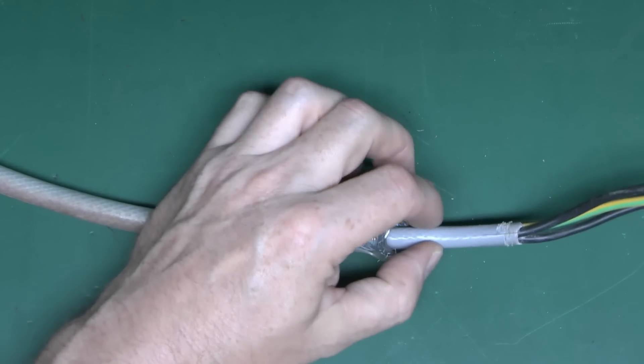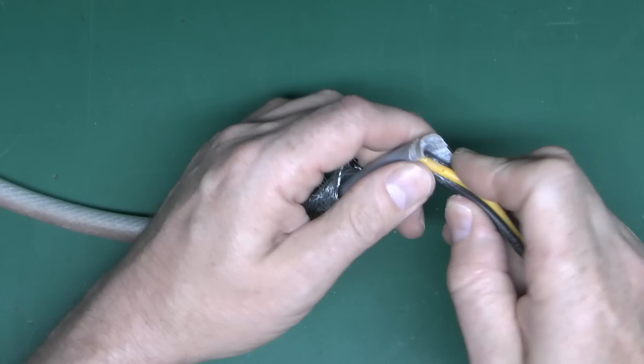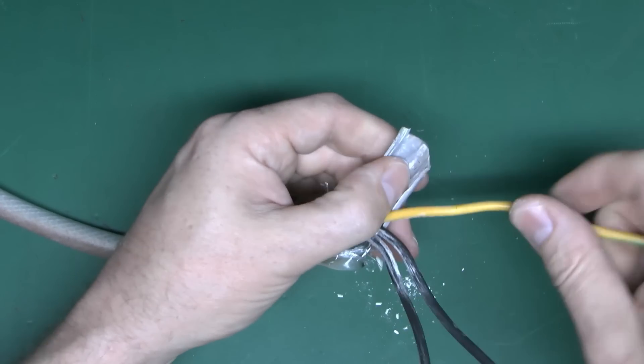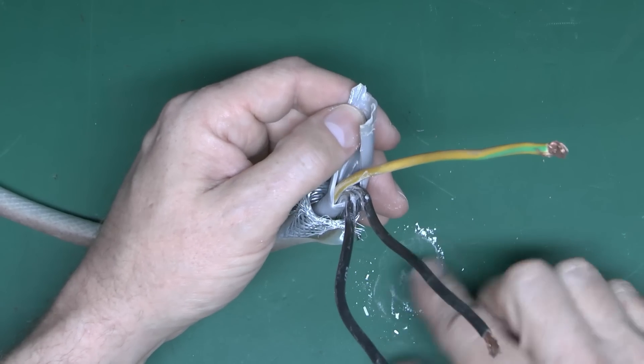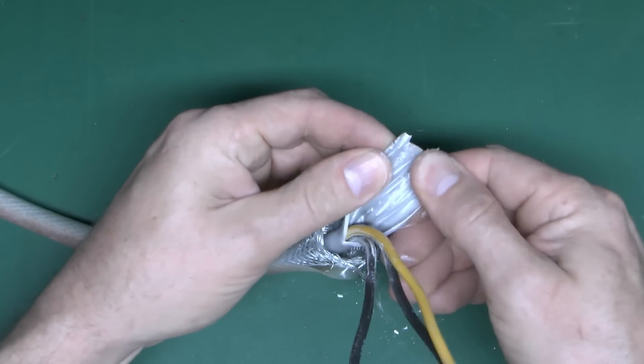We'll just slice into that fairly carelessly, because we're not going to be using this cable for anything. And then inside you've got the 3 conductors, and then we have the usual asbestos, or cocaine, or whatever, spilling out from inside.